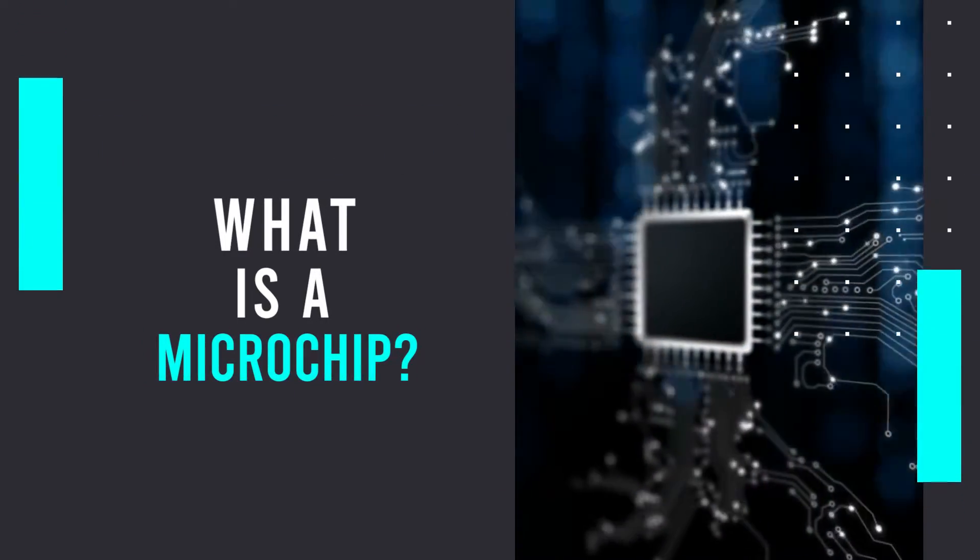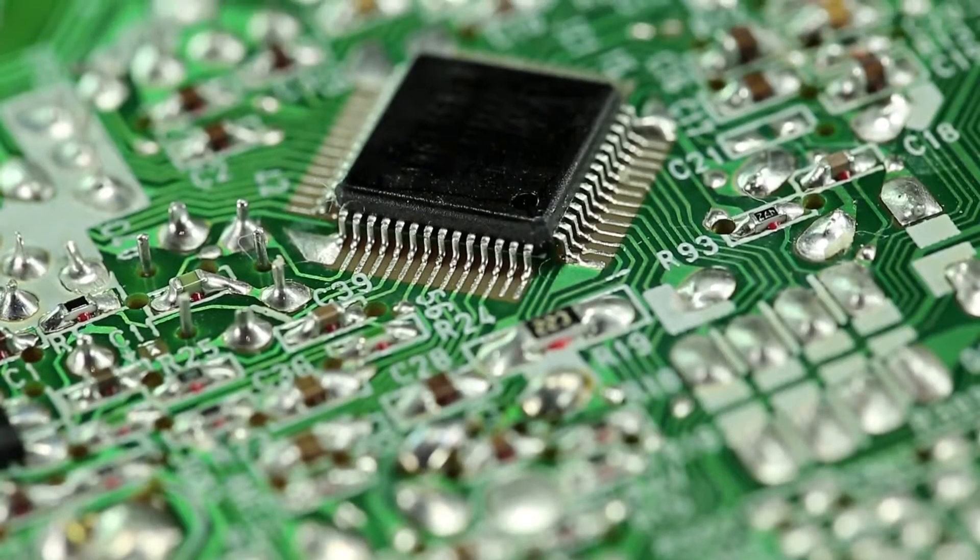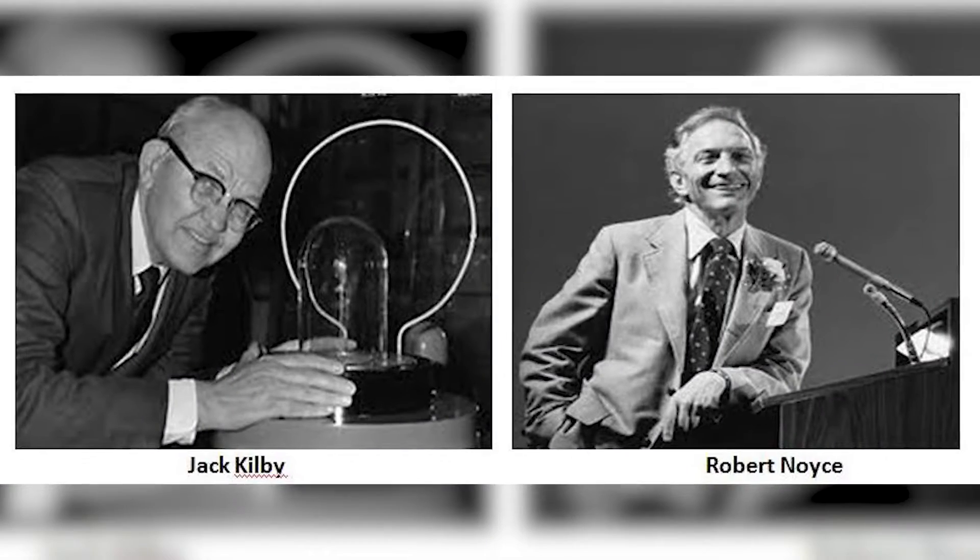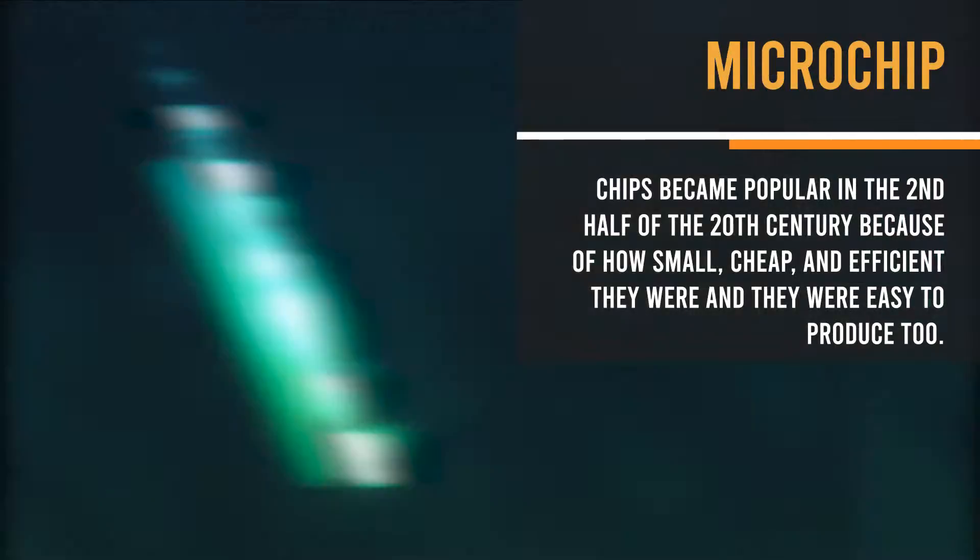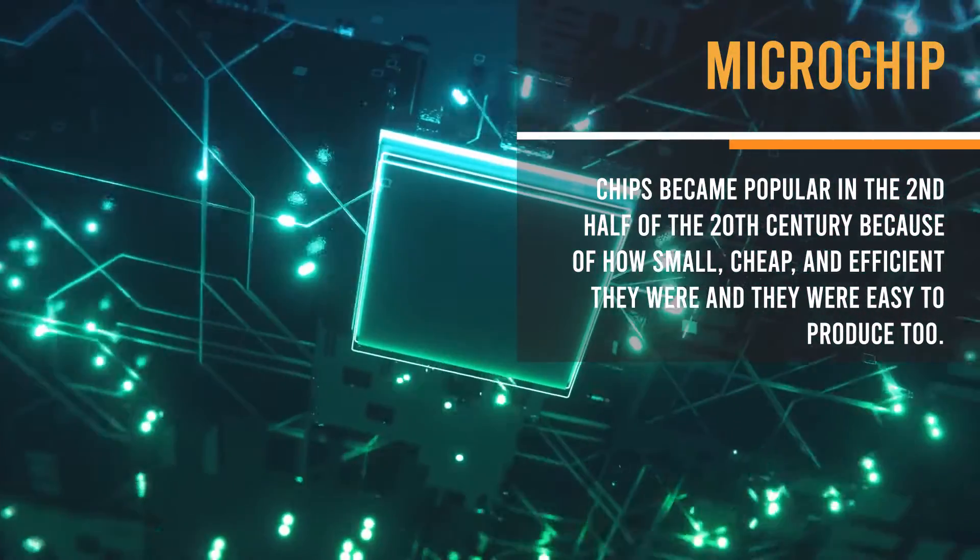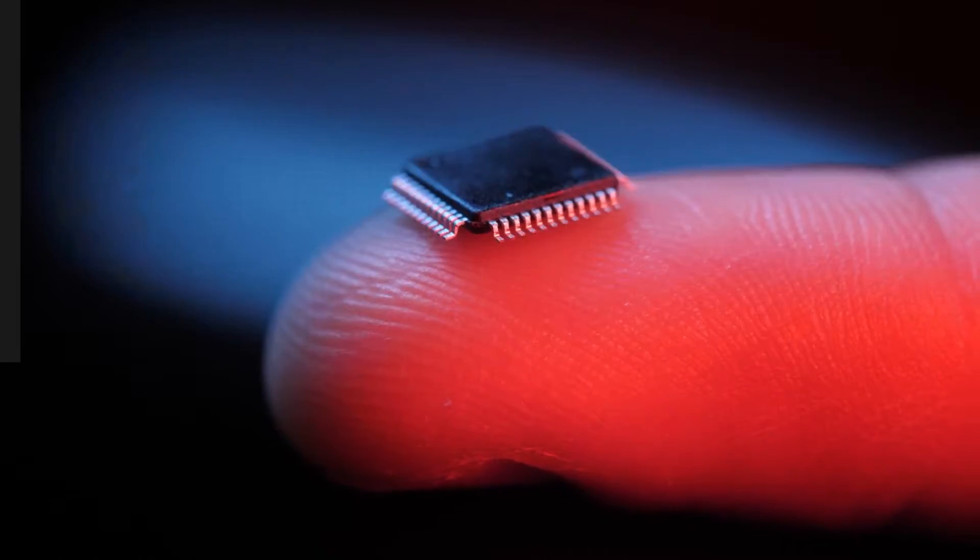What is a microchip? A microchip is a unit of packaged computer circuitry that is manufactured from a silicon material at a small scale. They came into our common knowledge through two researchers, Jack Kilby and Robert Noyce, in 1958. Chips became popular in the second half of the 20th century because of how small, cheap, and efficient they were, and they were easy to produce, too.